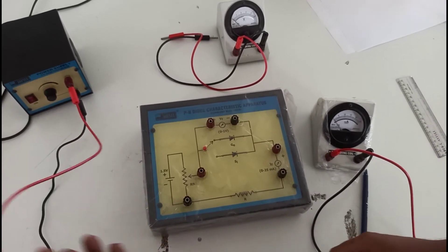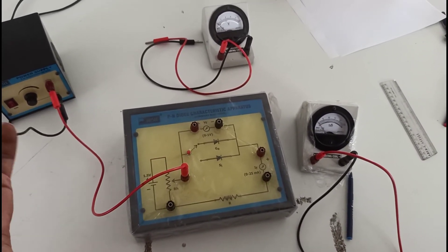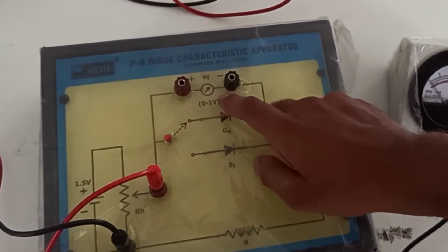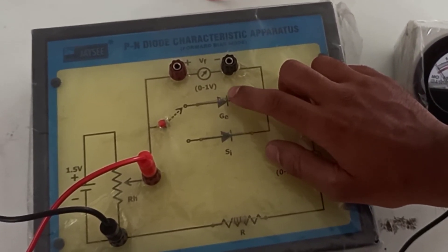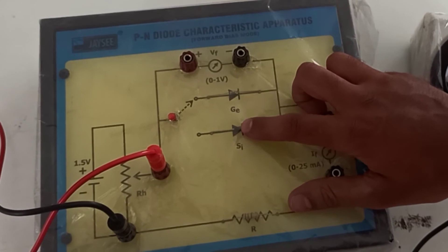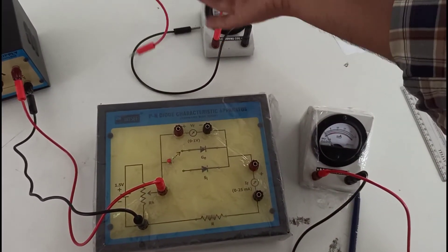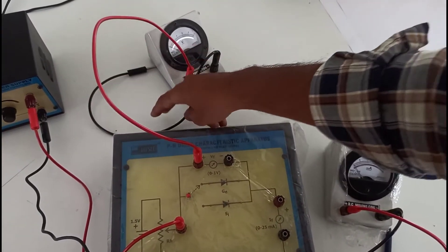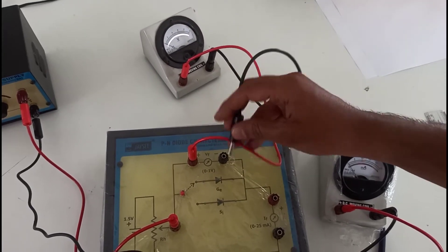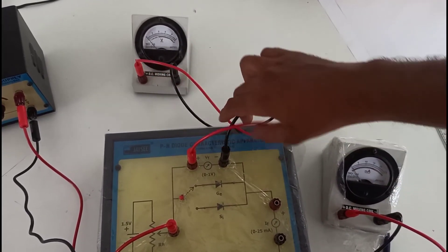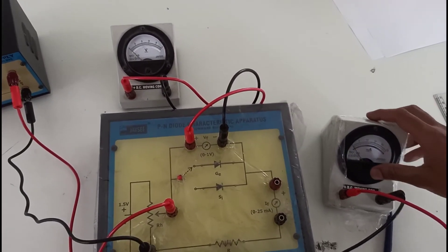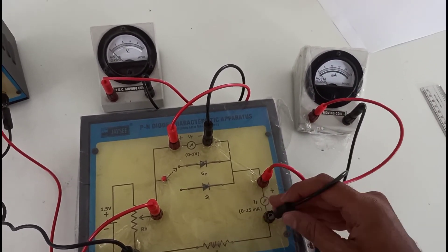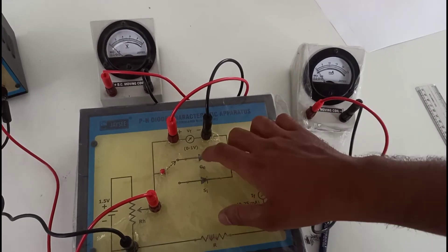The positive of the battery goes to the positive terminal and the negative (black) goes to the negative terminal. This is the PN Junction Diode of germanium and this is the PN Junction Diode of silicon. The positive of the voltmeter goes to the positive terminal, and the negative of the voltmeter goes to the negative terminal, connected in parallel with the PN Diode. The ammeter is connected in series with the PN Junction Diode.